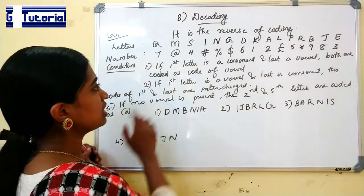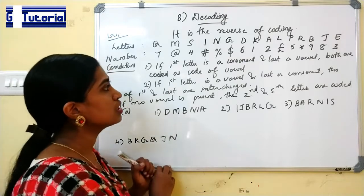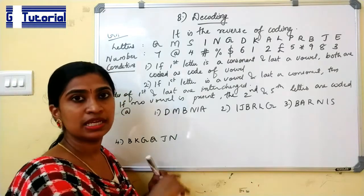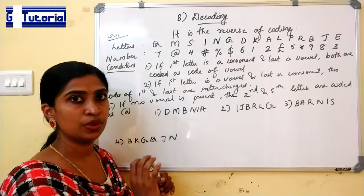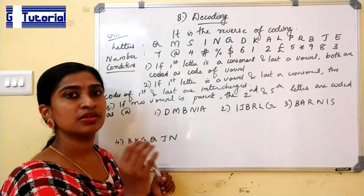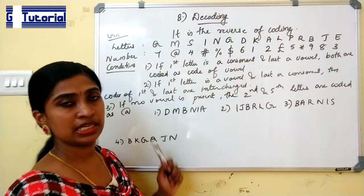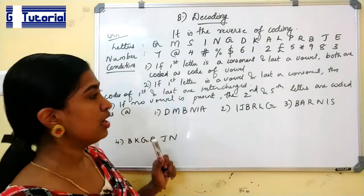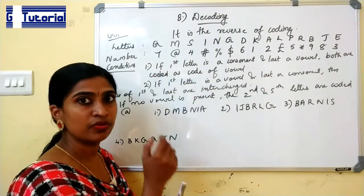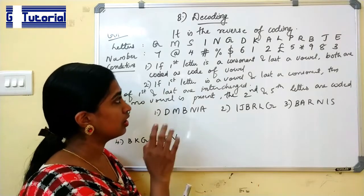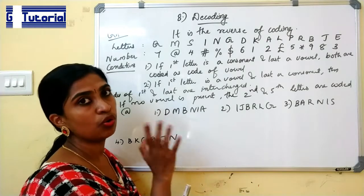First is, if first letter is a consonant and last is a vowel, both are coded as code of vowel. Vowel means English alphabet has five vowels: A, E, I, O, U. And the rest of the letters are called consonants. So if the word starts with a consonant and ends in a vowel, both are coded as the code of vowel. That is, the first letter and last letter will be the code of vowel.